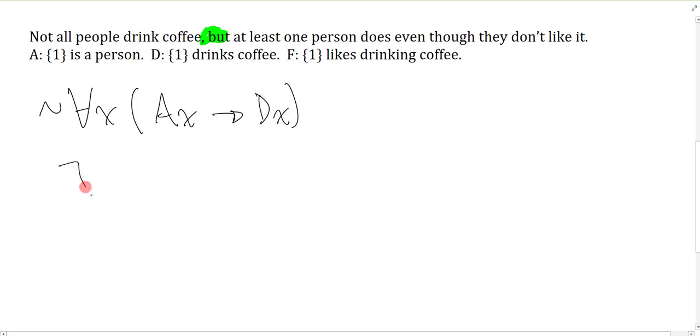And of course, the variant form of this, which is perfectly acceptable, and you can see it either way, is to have it this way. There is something that's a person and doesn't drink coffee, which of course means not all people drink coffee. And then we have but.